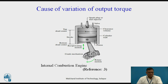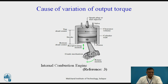The cause of variation of output torque in an internal combustion engine is as follows: the engine has different strokes — suction, compression, ignition (power stroke), and exhaust. The fuel ignites inside the cylinder during the ignition stroke, pushing the piston downward and rotating the crank. Since this power stroke is not continuous, power is available only during the power stroke, which causes variation in the output torque.